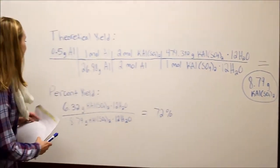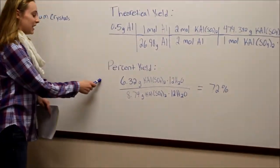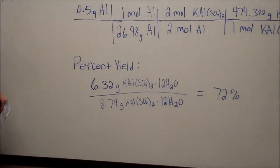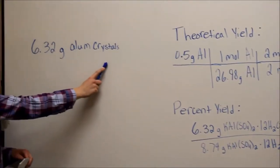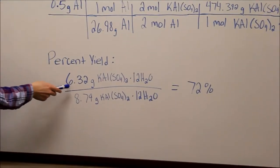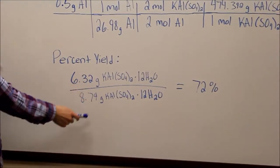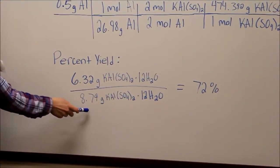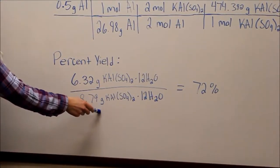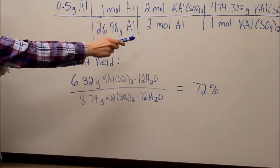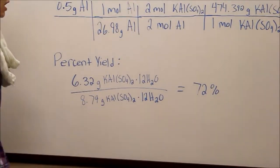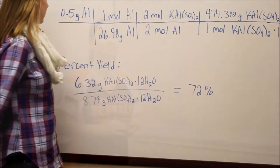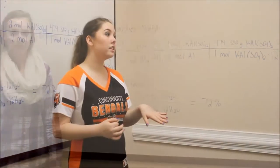To get our percent yield, we took our actual amount of alum crystals — 6.32 grams — and divided that by the theoretical yield of 8.79 grams, and we got a 72% yield.